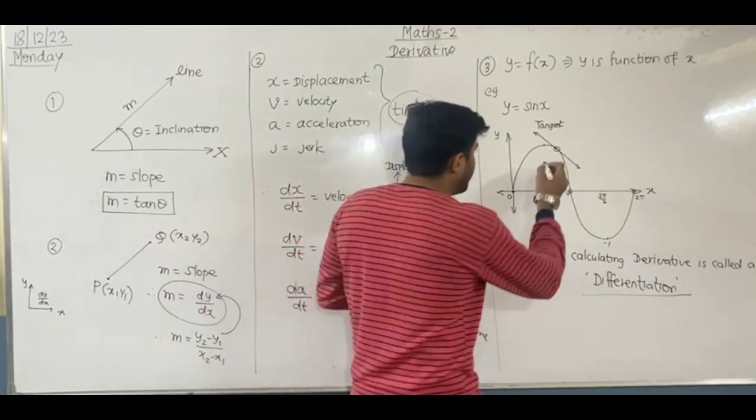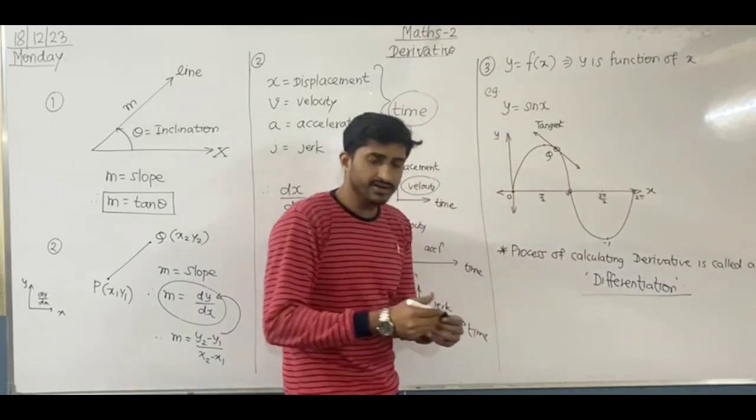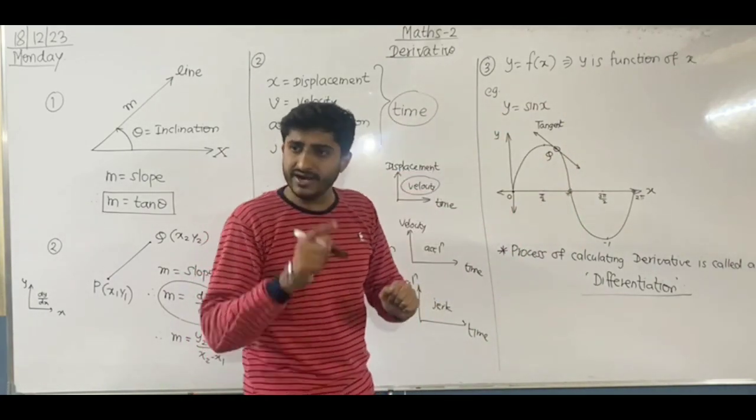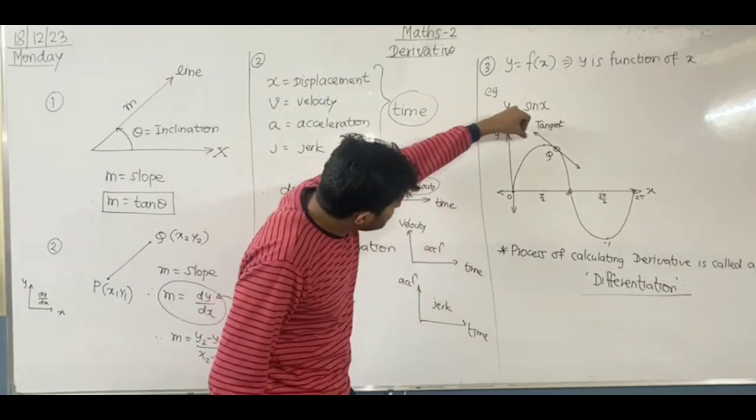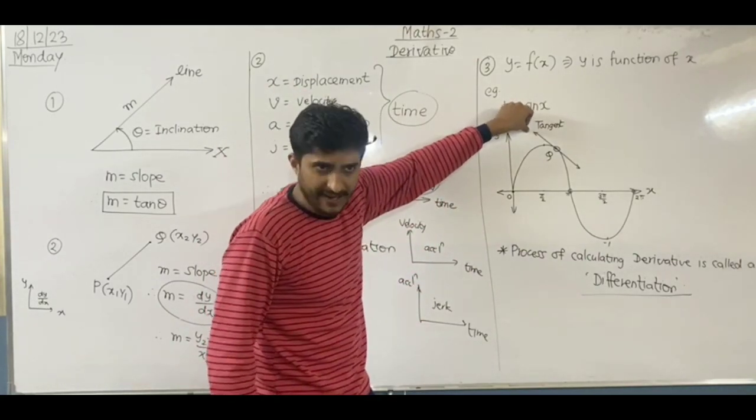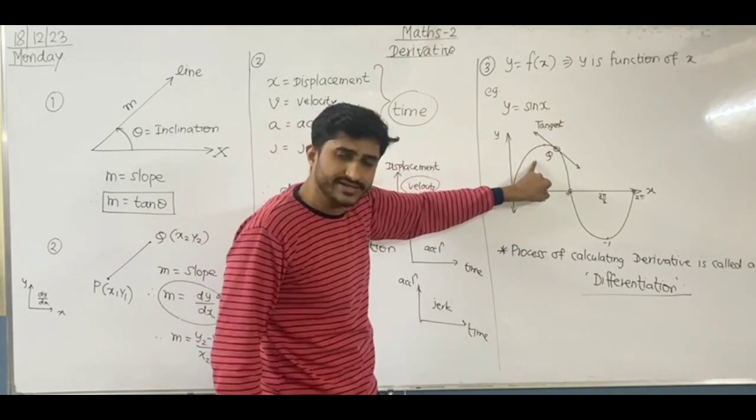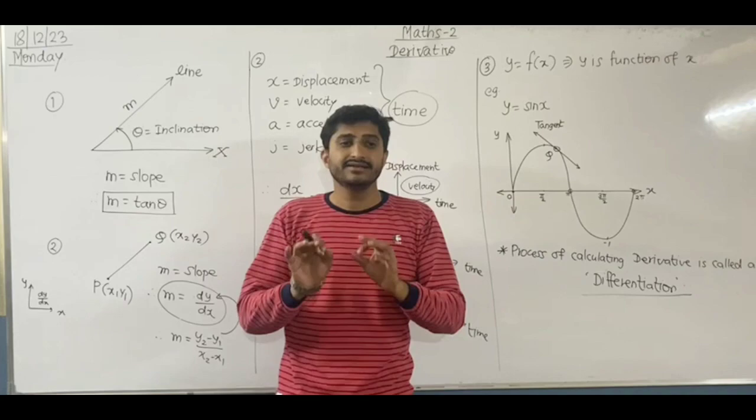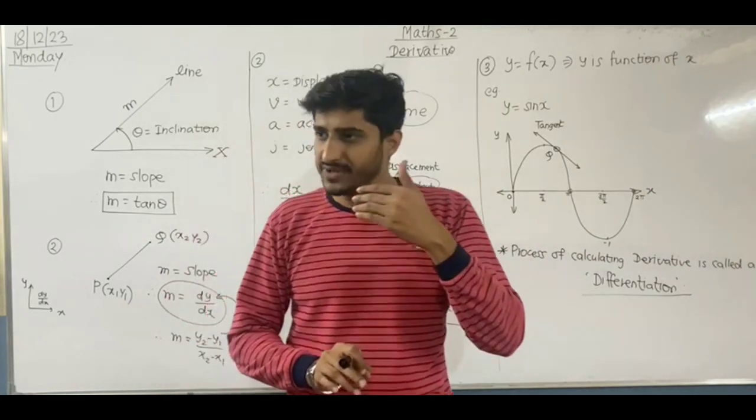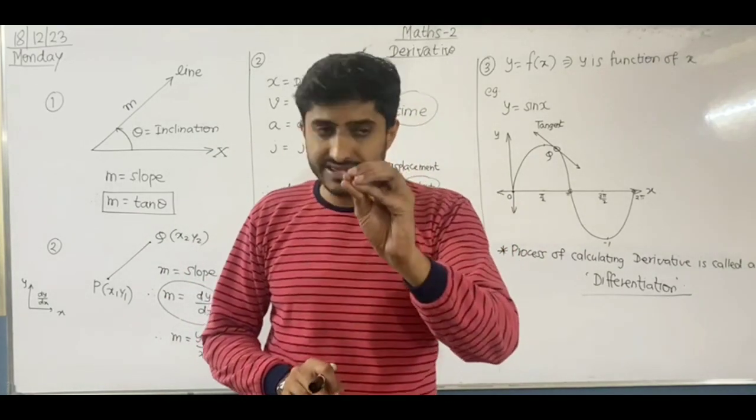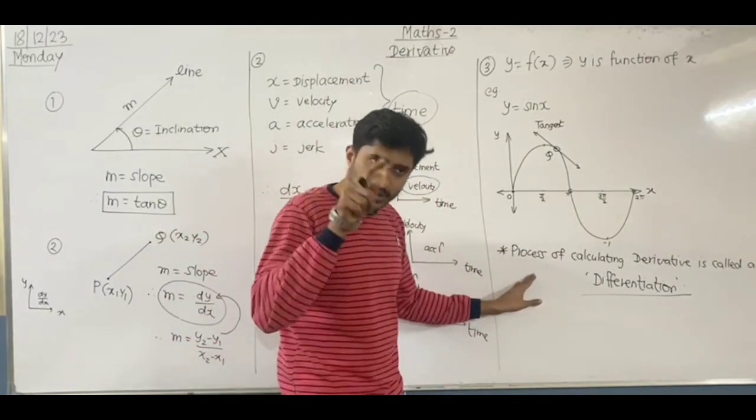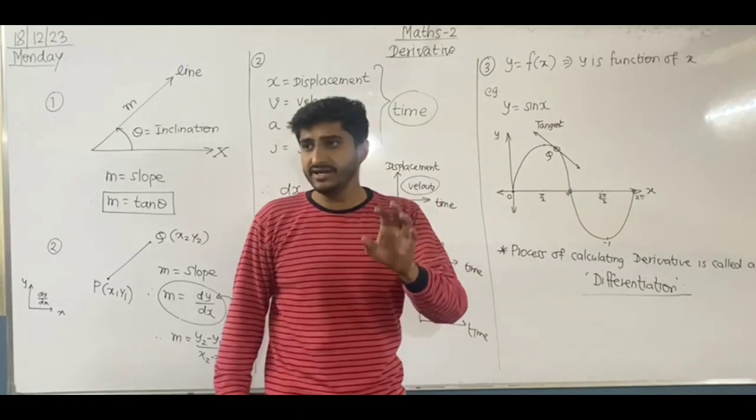At a point on the curve, we draw a tangent to calculate the slope. The slope of the tangent is the slope of the curve at that point. The process of calculating the derivative is called differentiation.